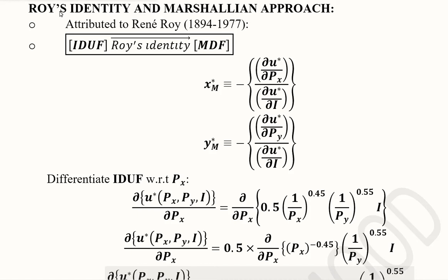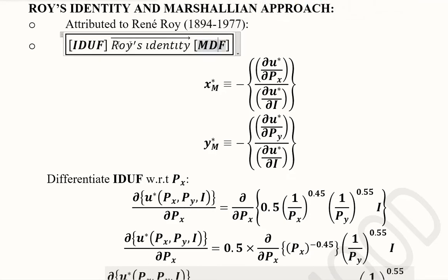This video is about Roy's Identity, which is applicable in the Marshallian demand approach. It was forwarded by Rene Roy, whose lifespan was 1894 to 1977. The basic idea behind Roy's Identity is that we can recover the Marshallian demand functions if we are given the indirect utility function. So by applying Roy's Identity, we can convert the indirect utility function into the Marshallian demand functions.